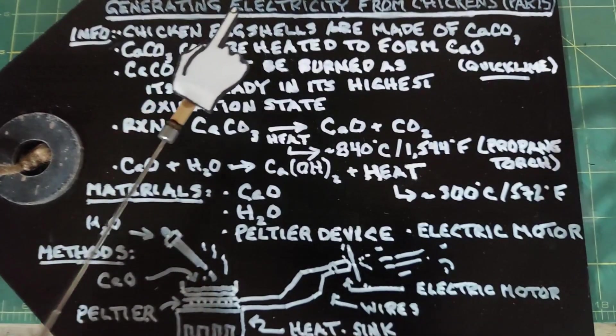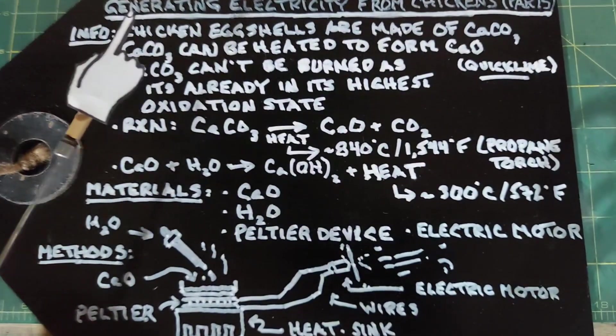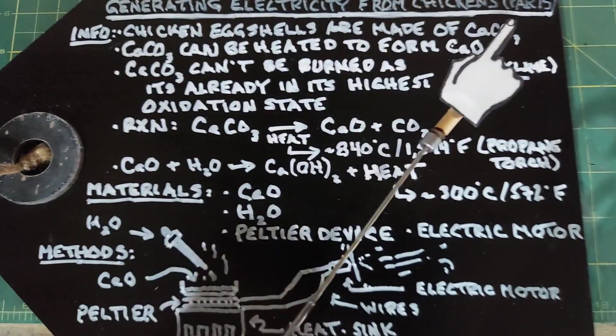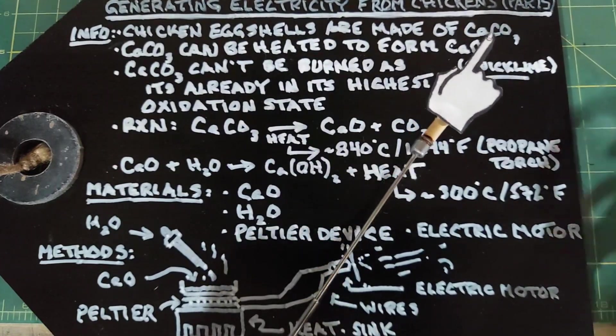This is a video about generating electricity from chicken parts. Some information about this: chicken eggshells are made of calcium carbonate. There's a couple other minor things in there like magnesium carbonate, but it's mostly calcium carbonate.